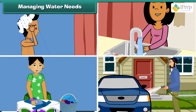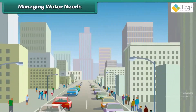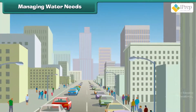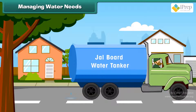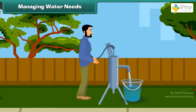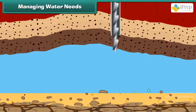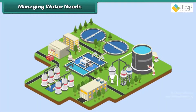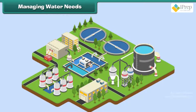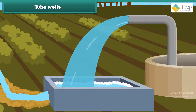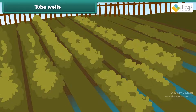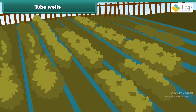People living in cities get water from tanks supplied by the jal board, from hand pumps, by digging bore wells, and from nearby water plants. A tube well is a small diameter hole drilled in the subsoil formation. It is very suitable where the subsoil formation is suitable for storing water.